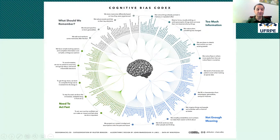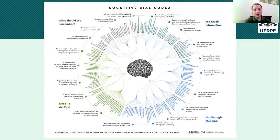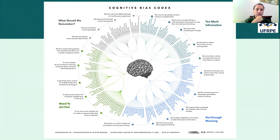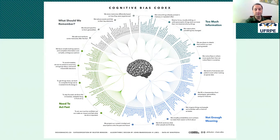And finally, you have what happens when people have to look for some sort of memory before making a decision. When you have to remember something before making a choice, there are predictable biases that will affect your decision. So the four categories are: too much information, not enough meaning, when you need to act fast, and when you have to remember something before making a decision.